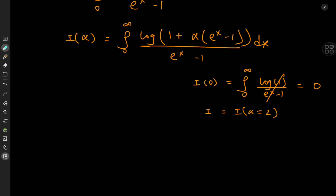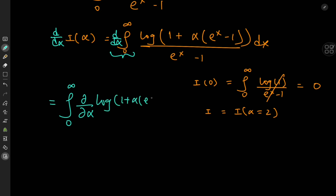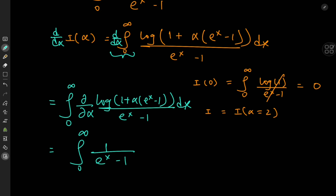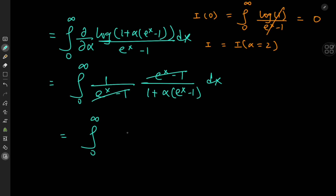So we have a plan. Now it's time to differentiate the integral function with respect to the parameter alpha. We switch the order of integration and differentiation operators and get the integral from zero to infinity of the partial derivative — by the Leibniz rule — of the logarithm of one plus alpha times e to the x minus one divided by e to the x minus one, with respect to x. On differentiating partially, the reciprocal of e to the x minus one is treated as a constant, and we're left with the integral from zero to infinity of dx divided by one plus alpha times e to the x minus one.